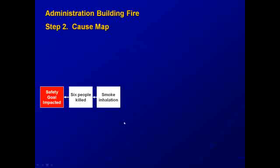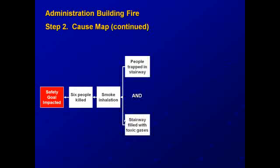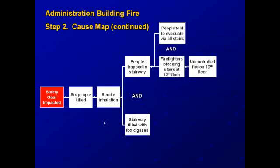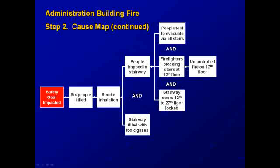Those people were killed by smoke inhalation because they were trapped in a stairway filled with toxic gases. The people were trapped in the stairway because they were told to evacuate via the stairs, and firefighters were blocking the stairs at the 12th floor because of an uncontrolled fire burning there. The stairway doors from the 12th through the 27th floor were locked, so anyone exiting above the 12th floor was not able to get back out until the 27th floor.